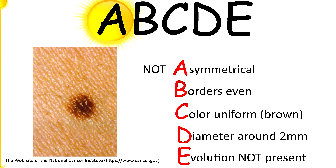Now let's compare that lesion to this lesion. Using the ABCDE assessment, we're looking to see if this is asymmetrical. This is not asymmetrical — if we draw a line down the middle, it would look even on each side. The borders are nice and even, not uneven like the one we just saw.